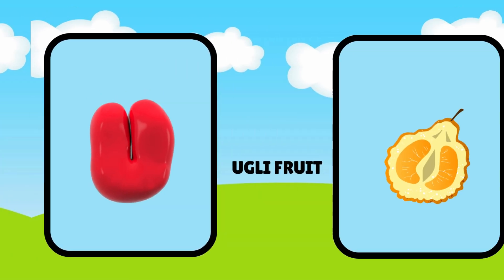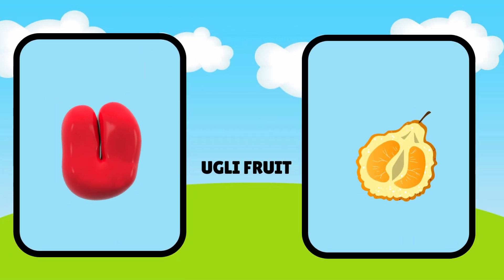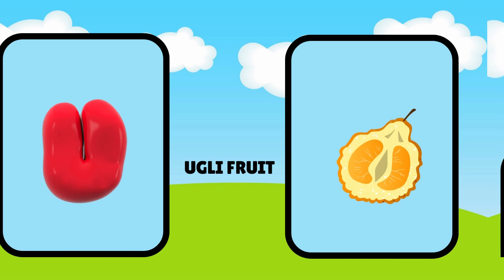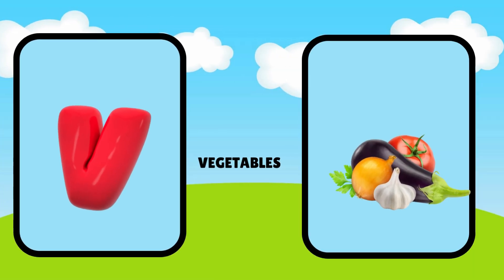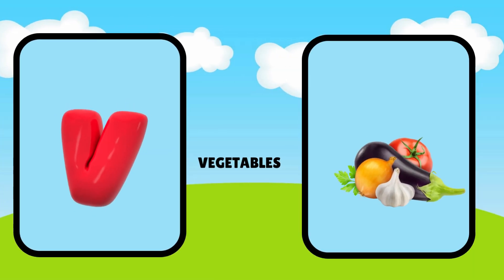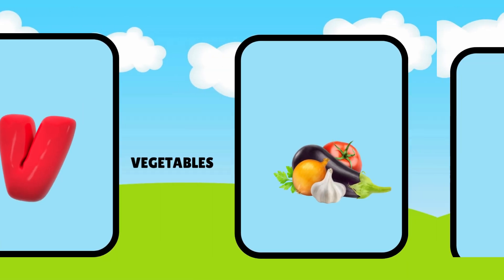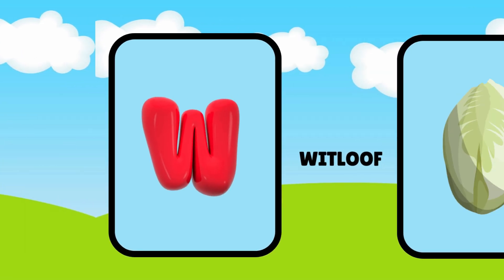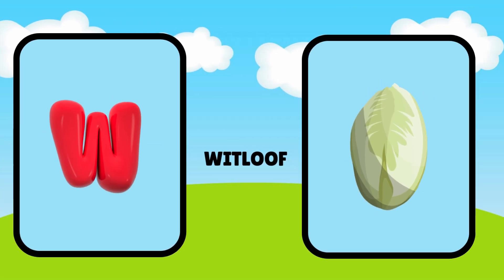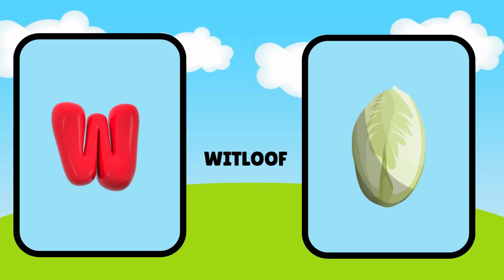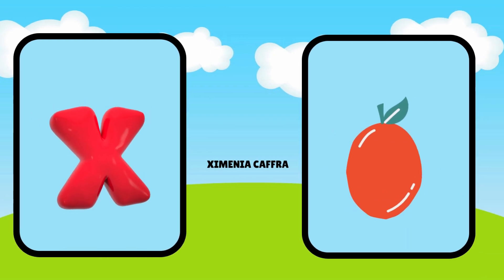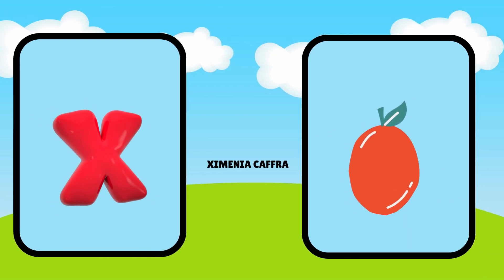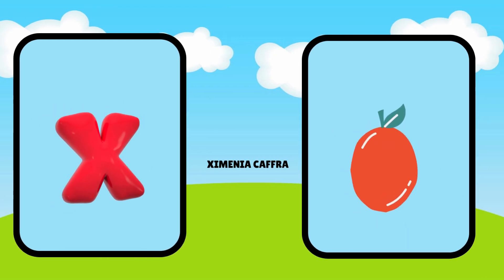U is for ugly fruit, uh, ugly fruit. V is for vegetables, vh, vegetables. W is for whitloaf, wuh, whitloaf. X is for zymenia caff, zh, zymenia caff.